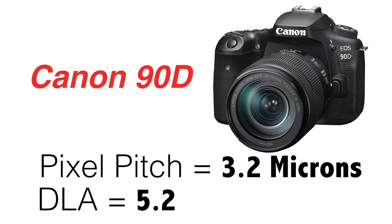DLA, or diffraction limited aperture, is largely dependent on the pixel pitch of the sensor you are using. Take for example the Canon 90D — it has a very tight pixel density and a DLA of 5.2.